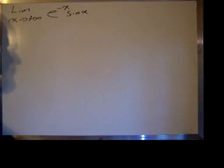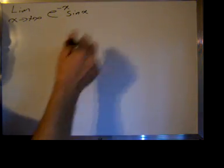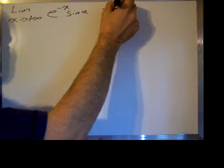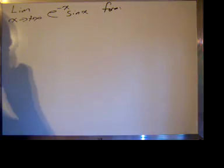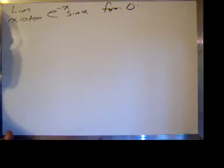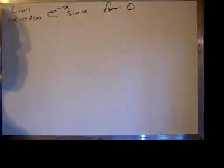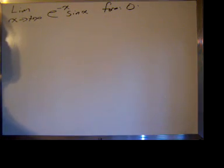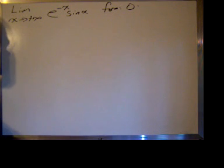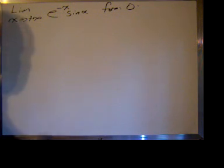So as we usually begin, we're going to start by looking at the form of this limit. As x goes to positive infinity, e to the negative x goes to zero. It's an elementary function — e to the x reflected about the y-axis — and generally e to the negative x is described as an elementary function, as well as the sine of x.